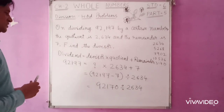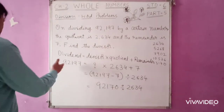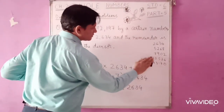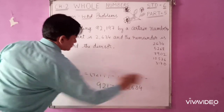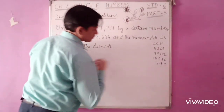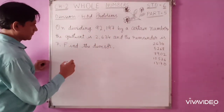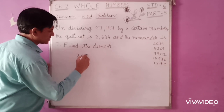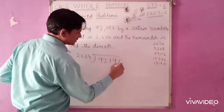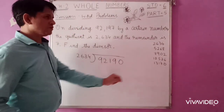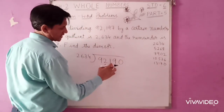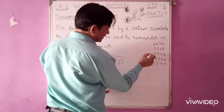Now divide 92,170 by 2634. Here I have prepared a table up to 5. First: 9219 — 2634 times 3 is 7902. When you subtract: 9 minus 2 is 7, 1 minus 0 is 1, 12 minus 9 is 3, 8 minus 7 is 1.